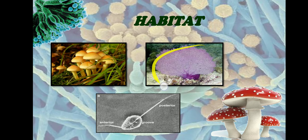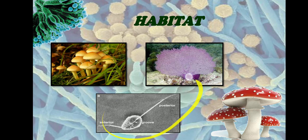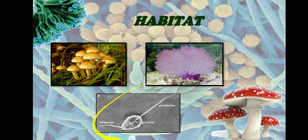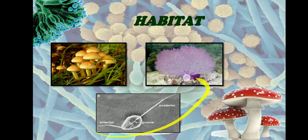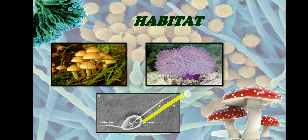Aquatic fungi produce reproductive spores which are motile in nature — they can move from one place to another on their own. They have flagella, which help the reproductive cells of aquatic fungi to swim to new localities.